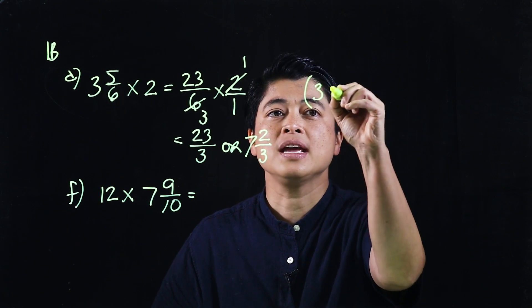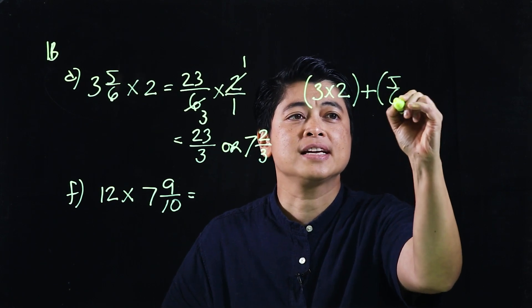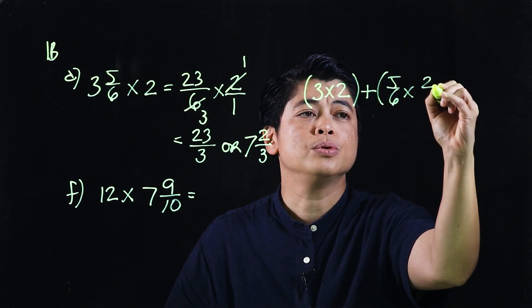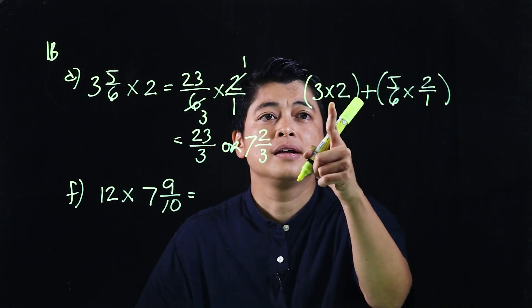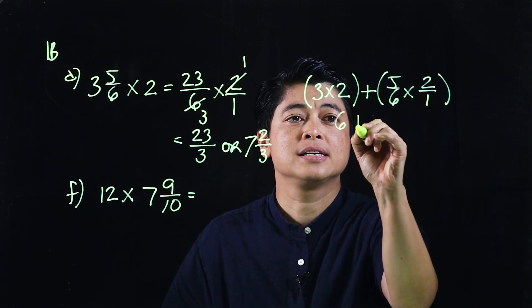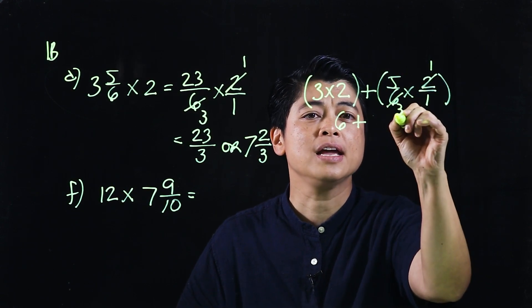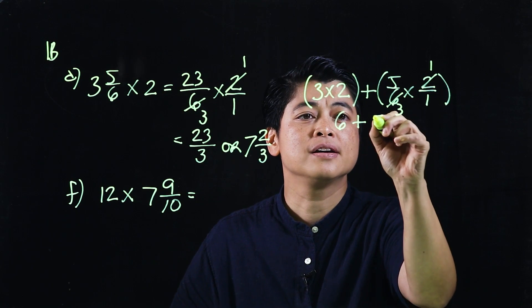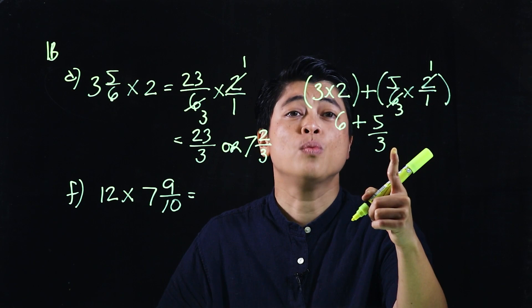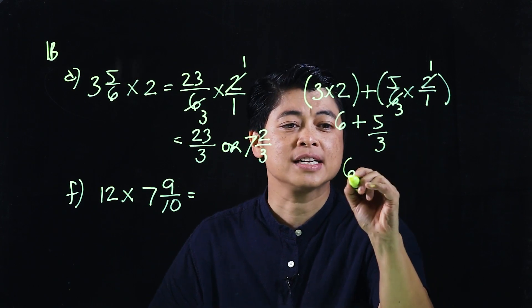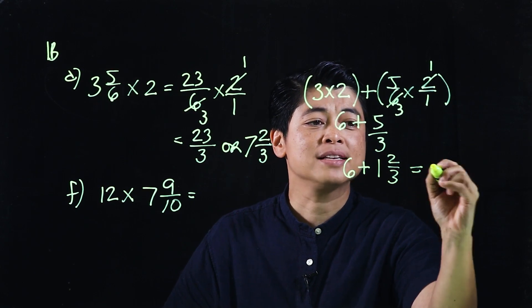So the method in the book will be 3 times 2 plus 5 sixths and again we'll make it over 1. The 3 times 2 is 6 plus this and this cancels 1 and 3 which gives us 5 thirds. But 5 thirds is 1 and 2 thirds, so that's 6 plus 1 and 2 thirds which means that is 7 and 2 thirds.